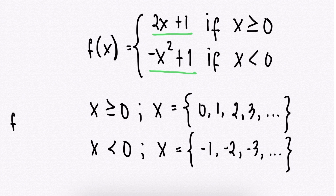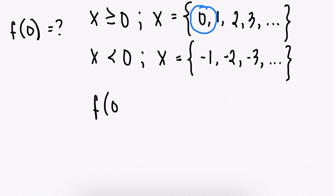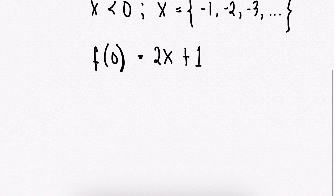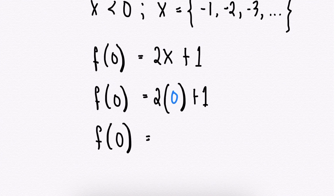What if you are asked to evaluate f(0)? Where does 0 fall? Of course, it falls under x ≥ 0. Therefore, we will be using 2x + 1. So f(0) = 2(0) + 1. f(0) = 0 + 1. Therefore, f(0) = 1.